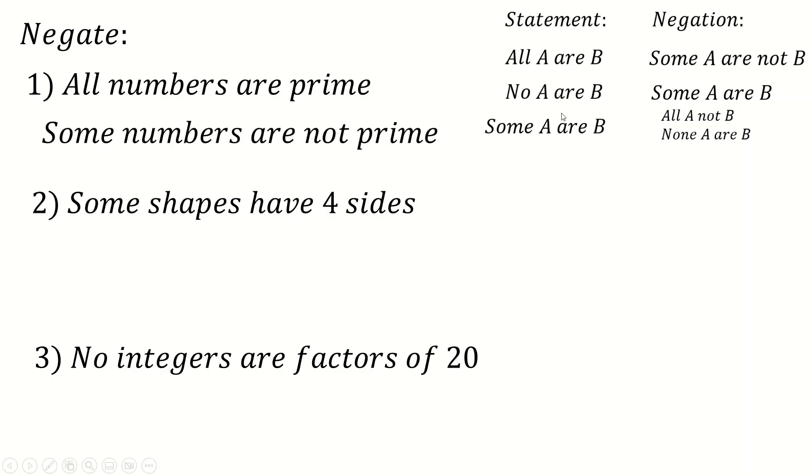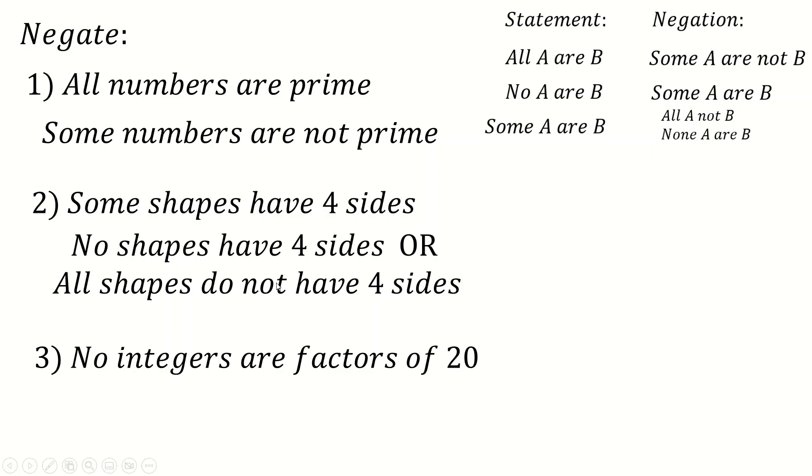Some shapes have four sides. That's a some statement. So we have two choices here. We can either say all A not B, so all shapes don't have four sides, or no shapes have four sides. Those would be the two negations we can use here. Either one is fine. Notice how this is actually a correct statement. Some shapes do have four sides. Negation doesn't care about correcting. As I said before, your job isn't to correct. It's to negate, regardless of whether it's correct or not. You don't care.